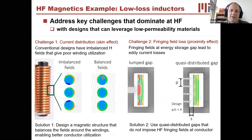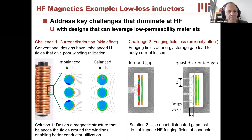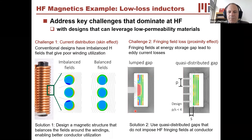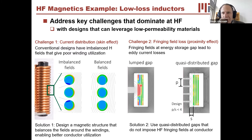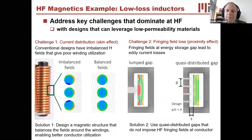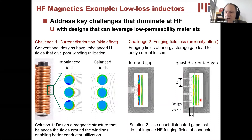If you can make the fields in the conductors very balanced, you can distribute the net current much more effectively across the conductor. Another limit is proximity effect from gap fringing: if you have a gap in the magnetic core to store energy, fringing from that gap hits the winding and induces loss. Those winding losses are extremely sensitive to frequency — often going up as frequency squared for a given conductor thickness — making high-frequency design very difficult. On the other hand, using distributed or quasi-distributed gaps can avoid large fringing and hence reduce proximity-effect loss in the conductors.